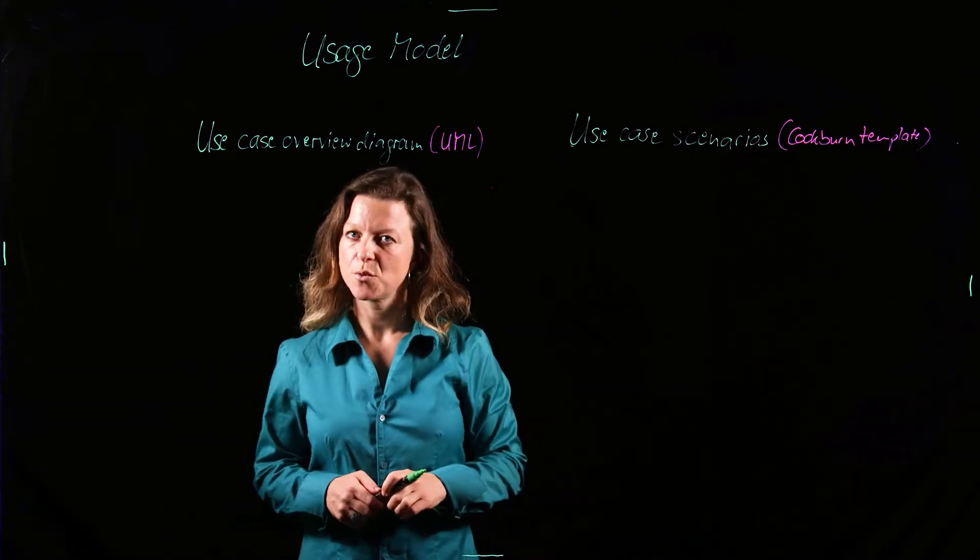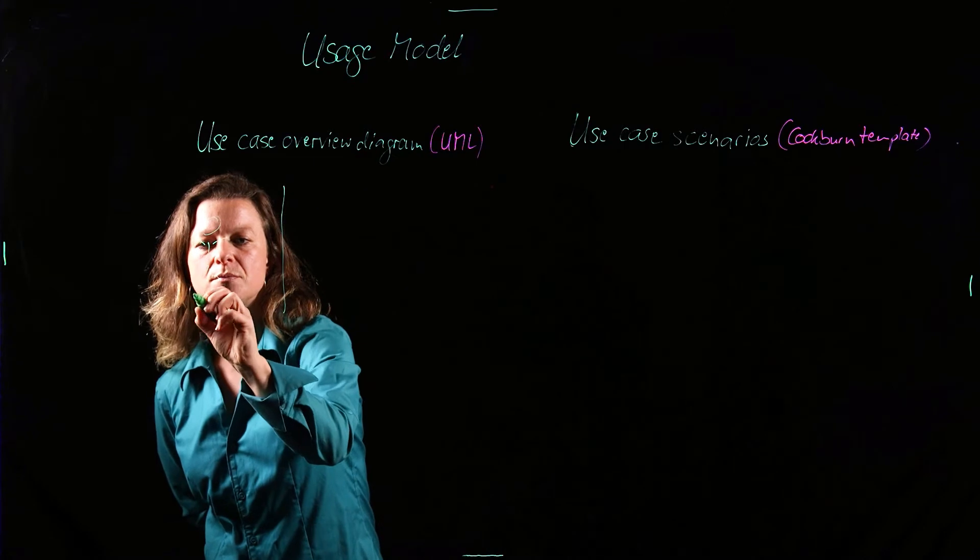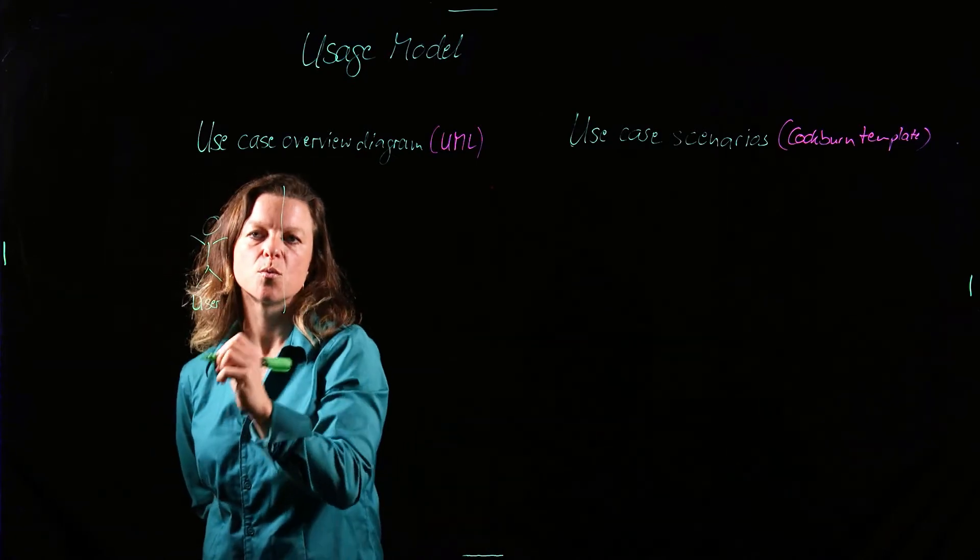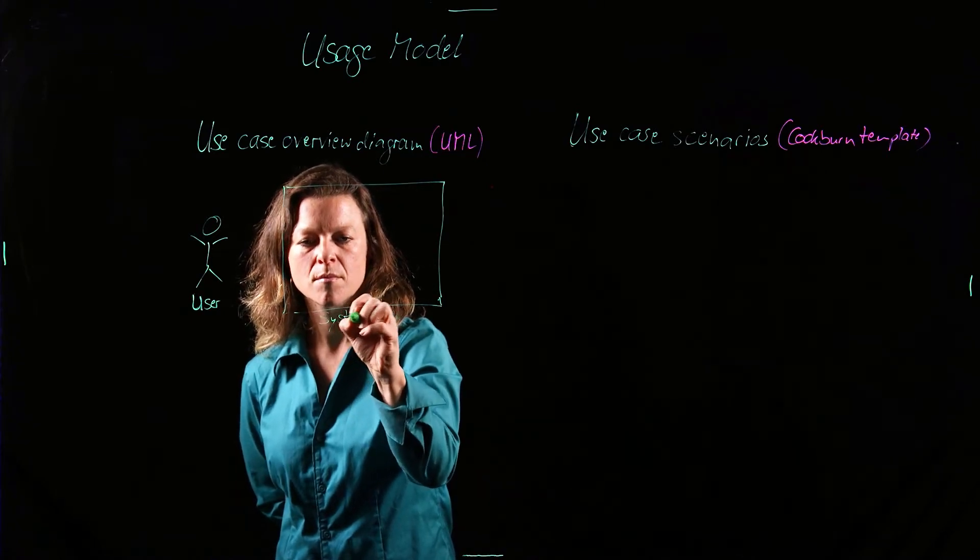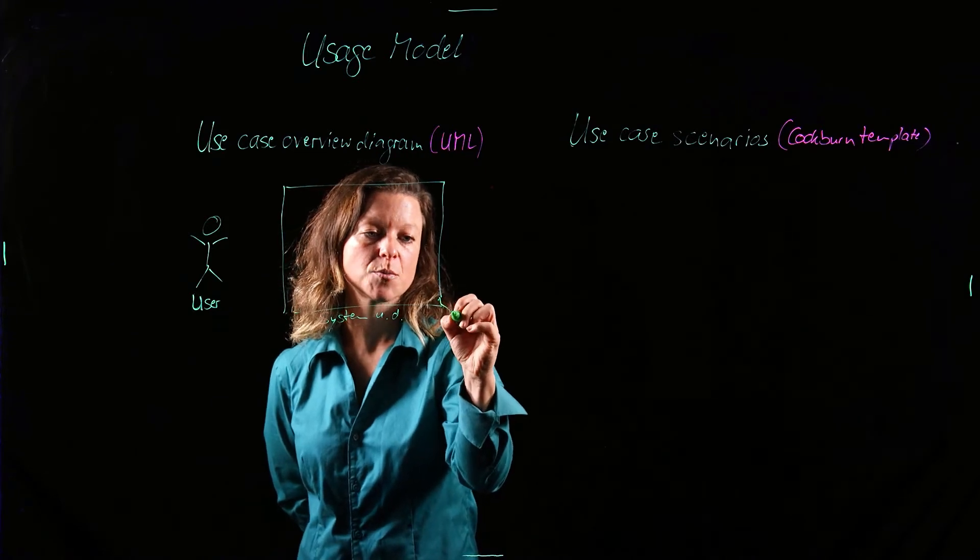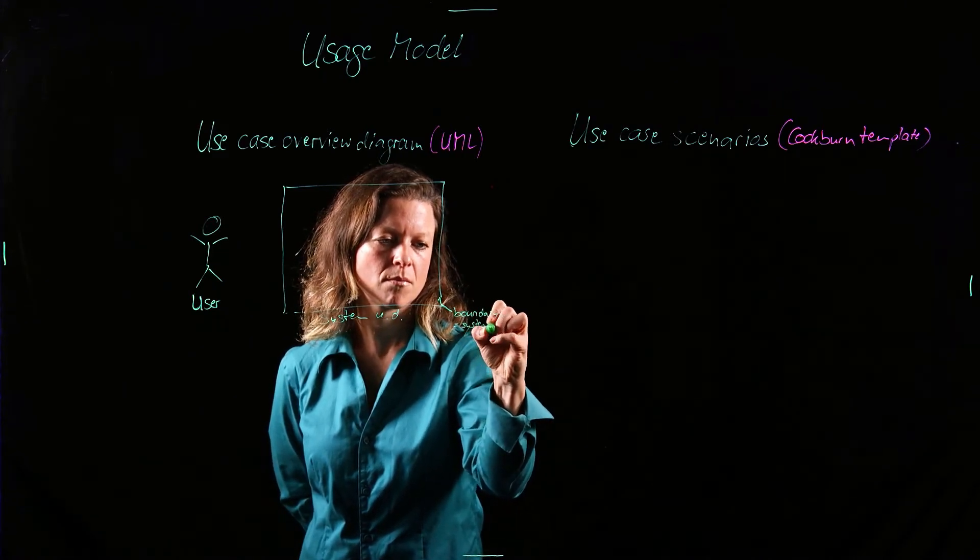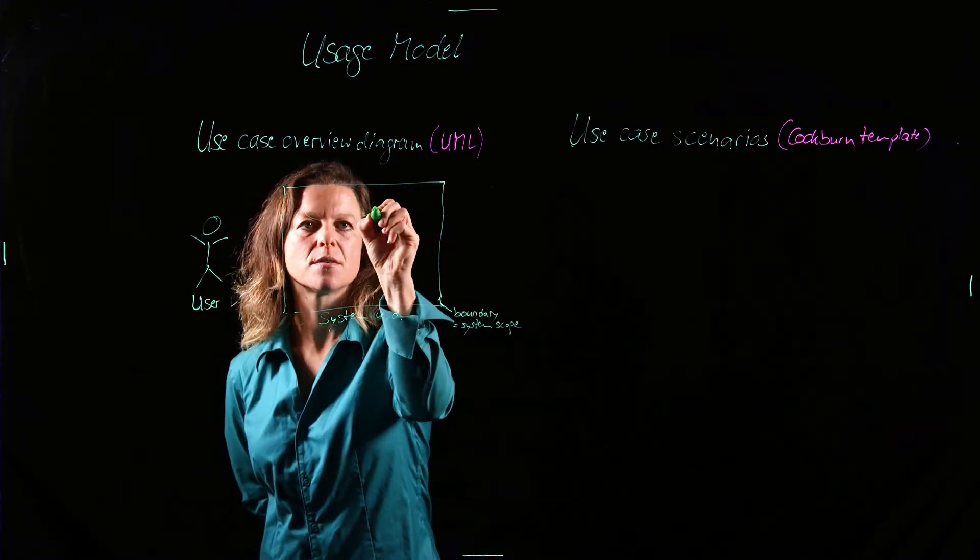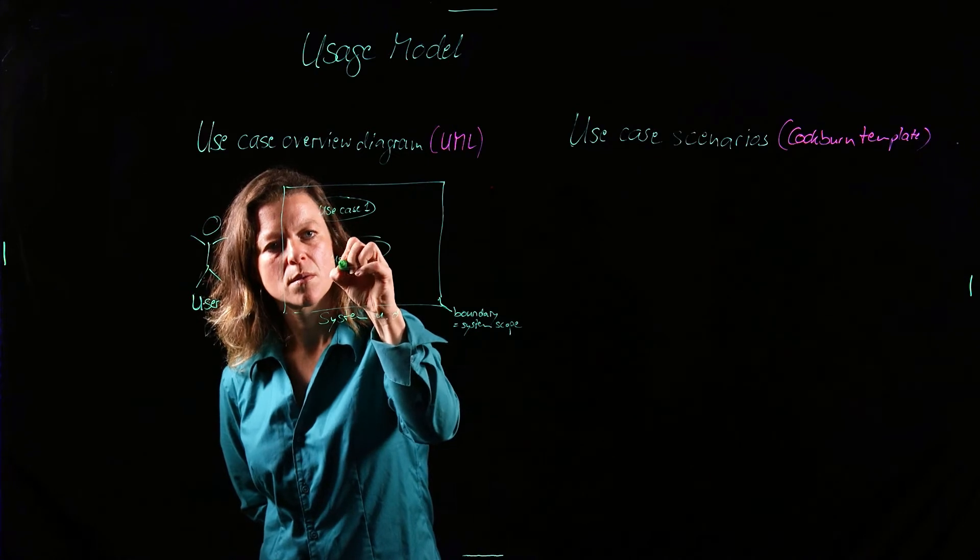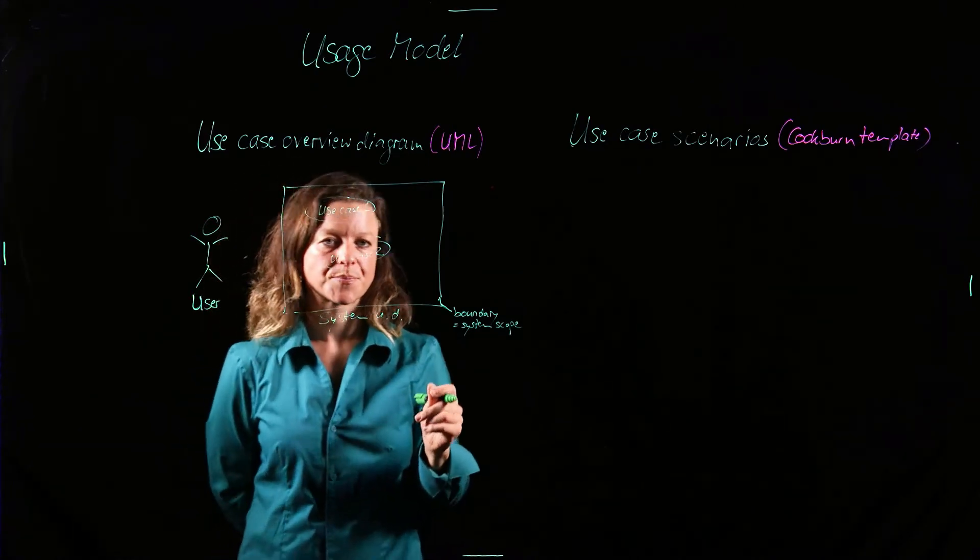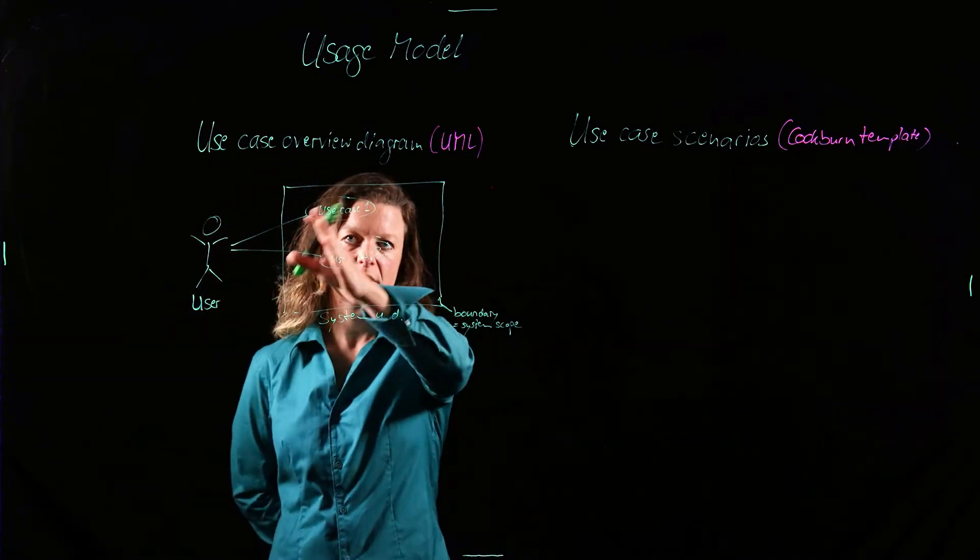The use case overview diagram is also known informally as the bubble diagram and this is what it looks like. We have a user and this user is representative for a user group. We have the system boundary, system under development. This boundary is the system scope and then in here we have the use cases. And then we have a straight line from a user to a use case that denotes that this user can carry out that use case.